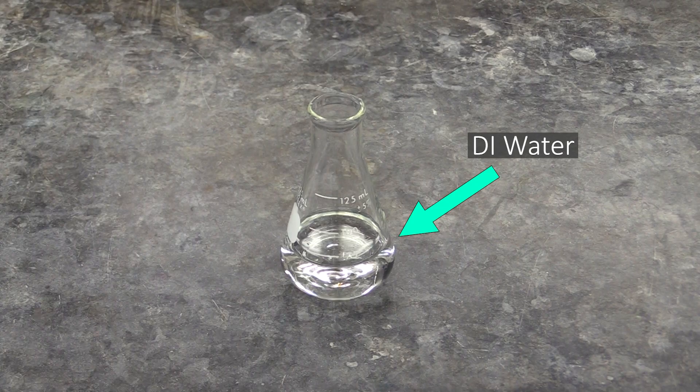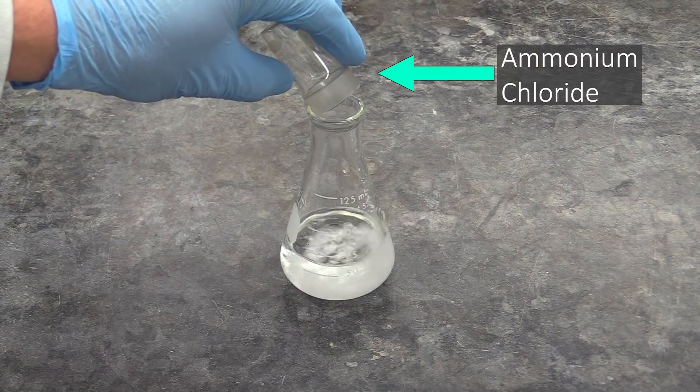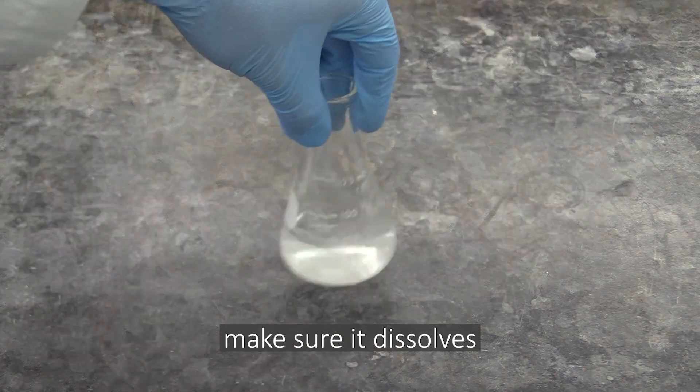For your second reaction, you'll add some DI water to a flask, then add a few grams of ammonium chloride to that same flask, mix, and monitor the reaction's temperature over the following few minutes.